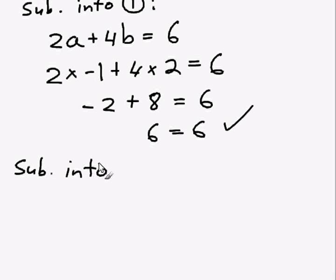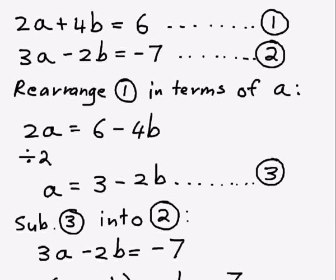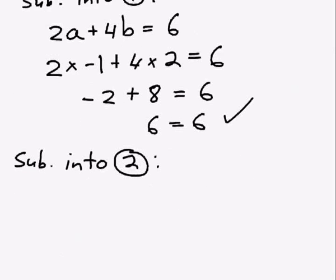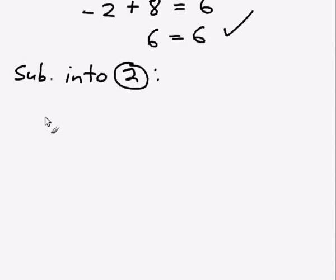Next thing to do is to check them with equation 2. Equation 2 is 3a minus 2b equals minus 7. So we'll write that back down. 3a minus 2b equals minus 7.